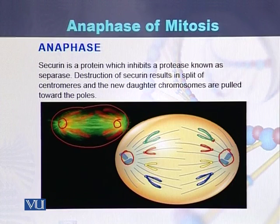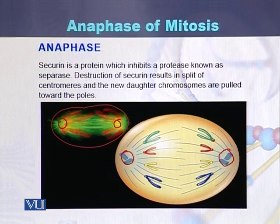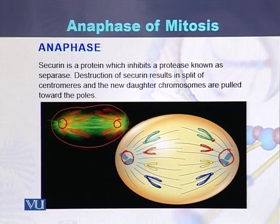Securin is a protein which actually inhibits a protease known as separase. When securin is functional, the chromosomes will not separate. The destruction of securin results in the split of centromeres, and once securin is destructed, the centromeres separate from each other and new daughter chromosomes are pulled towards the poles.